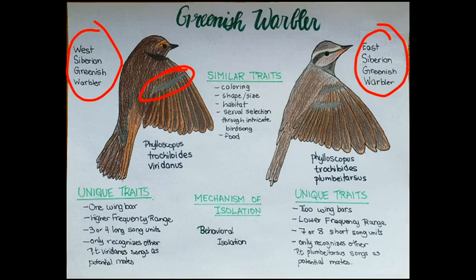The unique traits of P.T. plumeotarsus are that they have two wing bars, a lower frequency range, seven or eight short units of song, and they also only recognize other P.T. plumeotarsus songs as mates.